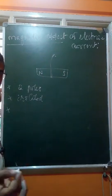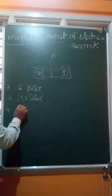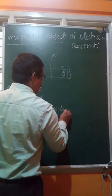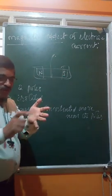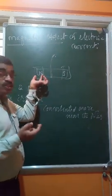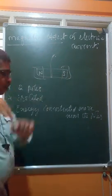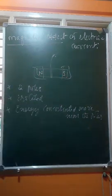The magnet has magnetic energy, and this energy is concentrated more near the poles. You may have observed that when you roll a bar magnet over iron filings and remove it, most of the iron filings attach to the ends rather than the middle. This is because more magnetic field — more magnetic energy — is concentrated at the ends of the magnet.